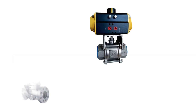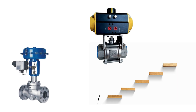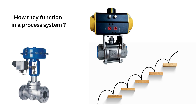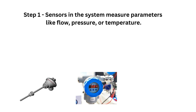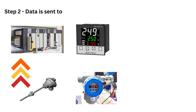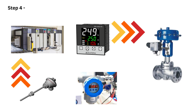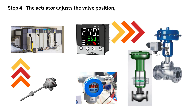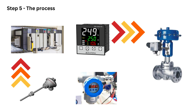Now we will discuss how control valves work in a system. Control valves are the final control element in a control loop. Here is a step-by-step breakdown of how they function. Step 1: sensors in the system measure parameters like flow, pressure, or temperature. Step 2: data is sent to the controller, which processes the information. Step 3: the controller sends a signal to the control valve's actuator. Step 4: the actuator adjusts the valve position, increasing or decreasing flow as needed. Step 5: the process stabilizes at the desired set point, ensuring optimal operation.